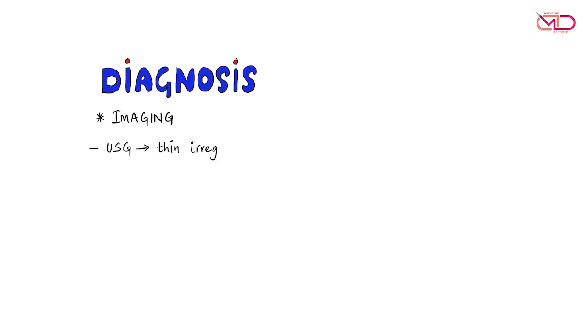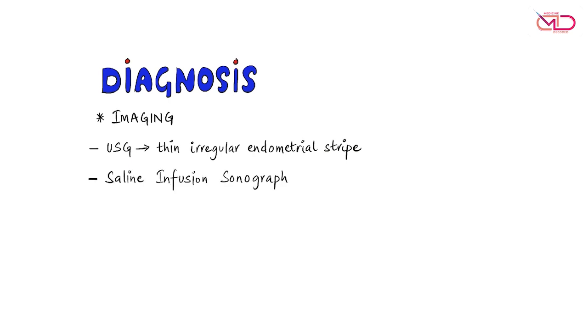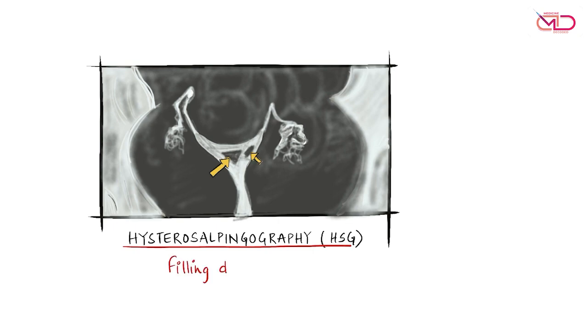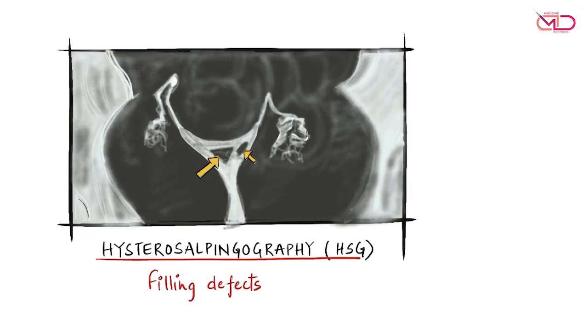The diagnosis requires imaging. Ultrasound can show a thin, irregular endometrial stripe. Saline infusion sonography provides better delineation of the endometrial cavity. Women with infertility often undergo tubal patency testing, which is done with hysterosalpingography, and that may show filling defects inside the uterine cavity.